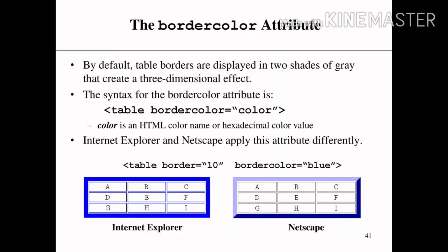Next topic is the border color attribute. By default, table borders are displayed in two shades of grey that creates a three-dimensional effect.